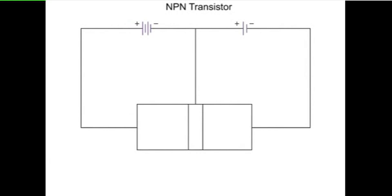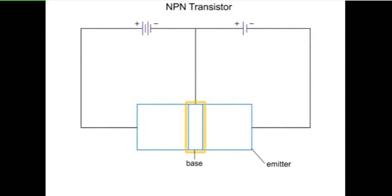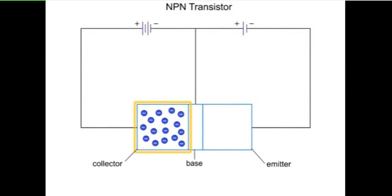The NPN transistor structure is composed of three regions. It has a heavily doped region of N-type material called the emitter. The emitter is very rich in free electrons. There is a base that is a narrow region composed of lightly doped P-type material. It has a few holes that are mobile and capable of carrying electrons. The collector region of N-type material is not as heavily doped as the emitter, but it also has free electrons.